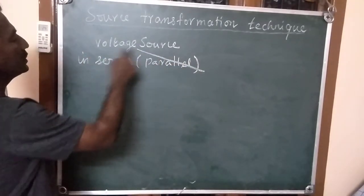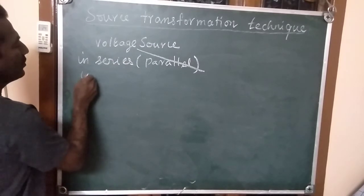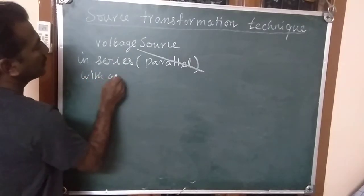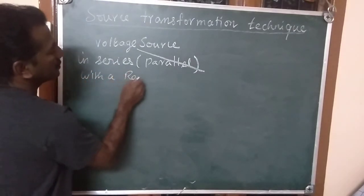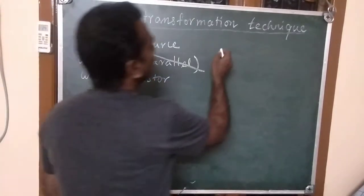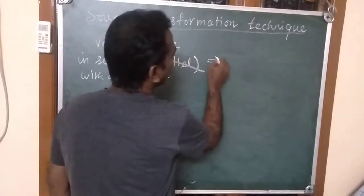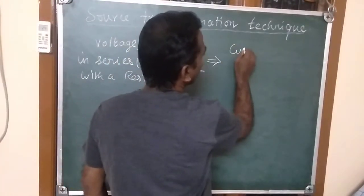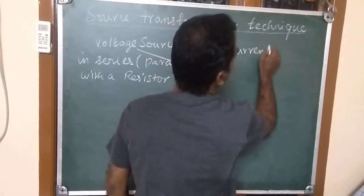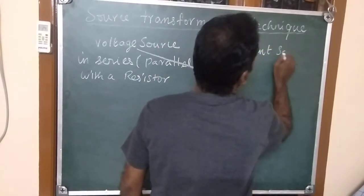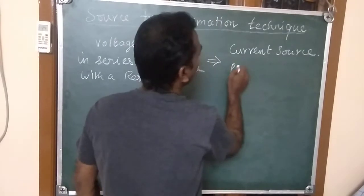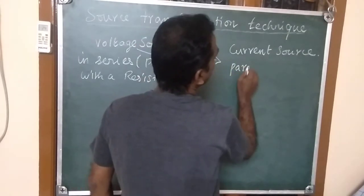A voltage source in series with a resistor can be converted into a current source parallel with a resistor.